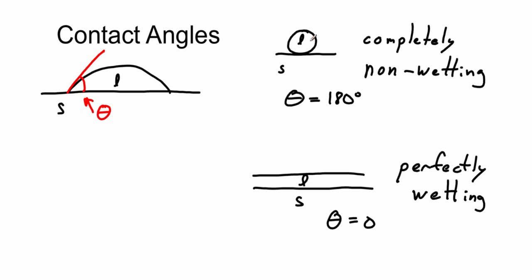And in most cases, we have something in between the two, where theta is some angle between zero and 180 degrees. And the cutoff between wetting and non-wetting is something that has a 90 degree contact angle. So if theta equals 90 degrees, it's neither wetting nor non-wetting.